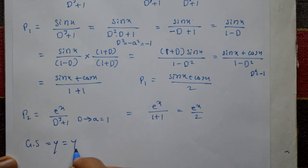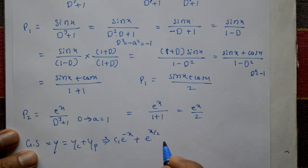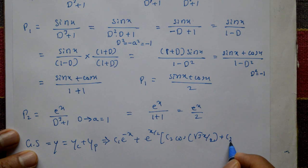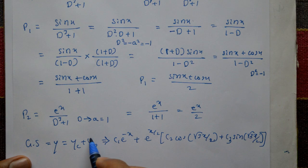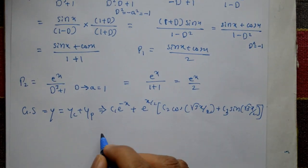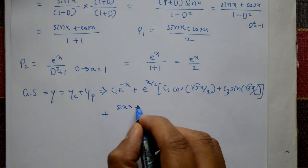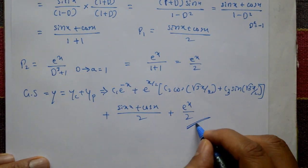Now the general solution: y = yc + yp. The complementary function is c₁e^(−x) + e^(x/2)[c₂ cos(√3x/2) + c₃ sin(√3x/2)]. Plus the particular integral yp = P1 + P2 = (sin x + cos x)/2 + eˣ/2. This is the required solution.